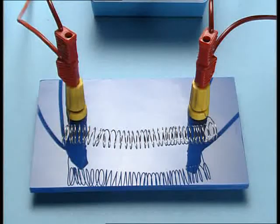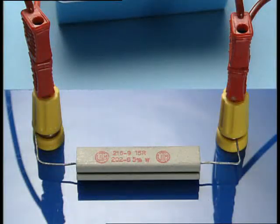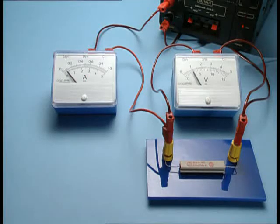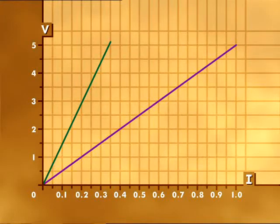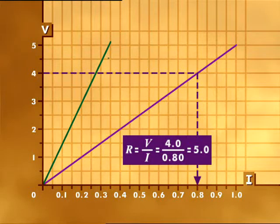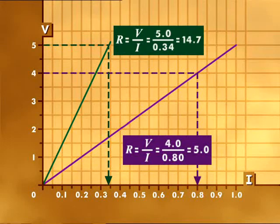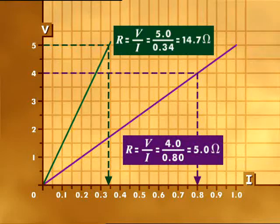When the wire is replaced with a resistor, plot the resistor data on the same graph and you can see it's also a straight line, but steeper. For the wire, the gradient R = V/I gives 4 divided by 0.8, a gradient of 5. For the resistor, the gradient equals 5 divided by 0.34, which equals 14.7. The value of the gradient is known as the resistance and is measured in ohms. So the resistance of the wire is 5 ohms, but for the resistor, much more — 14.7 ohms.